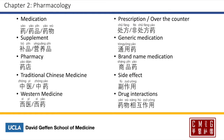Now let's talk about pharmacology. To say medication, you can say 药, 药品, or 药物 — they all mean the same. Supplements will be 补品 or 营养品. Pharmacy will be 药店. Traditional Chinese medicine, depending on the context, will be 中医 or 中药. We'll discuss about it a little bit later. Western medicine will be 西医 or 西药.